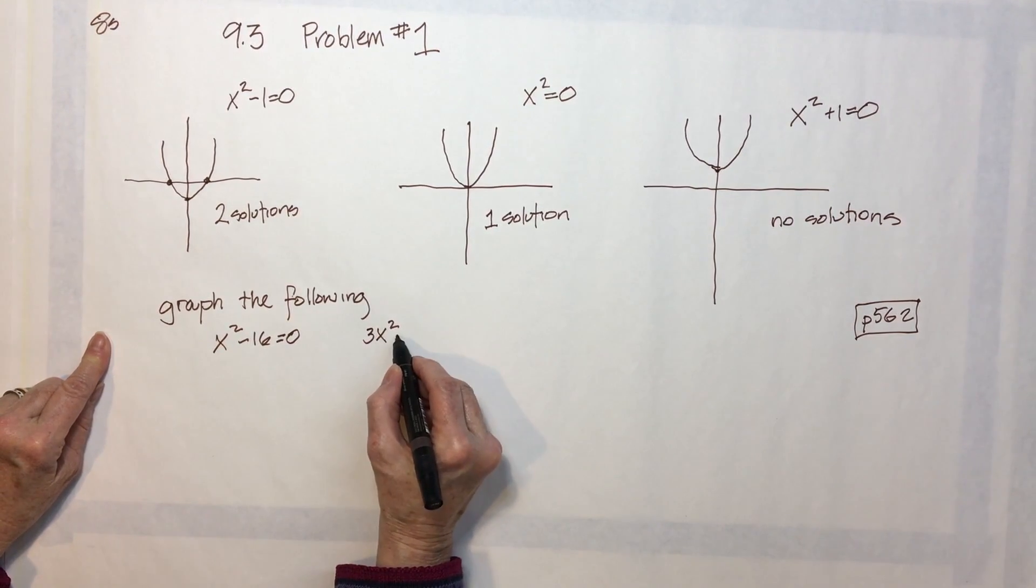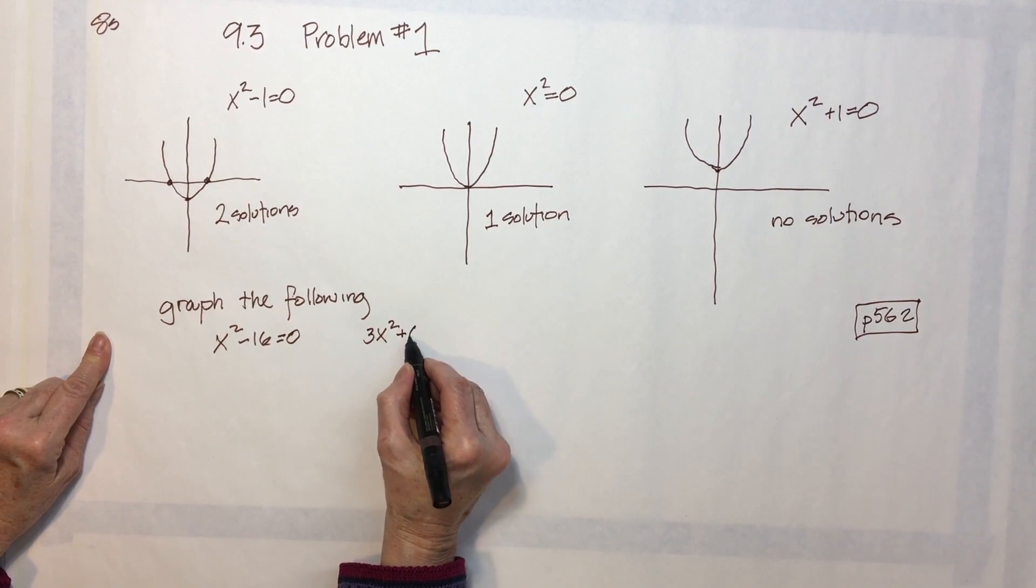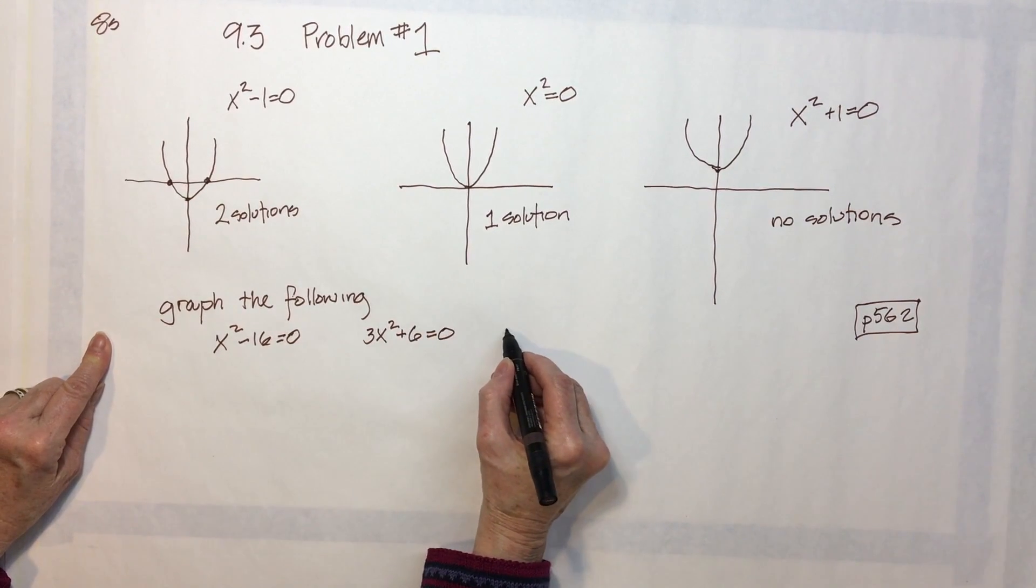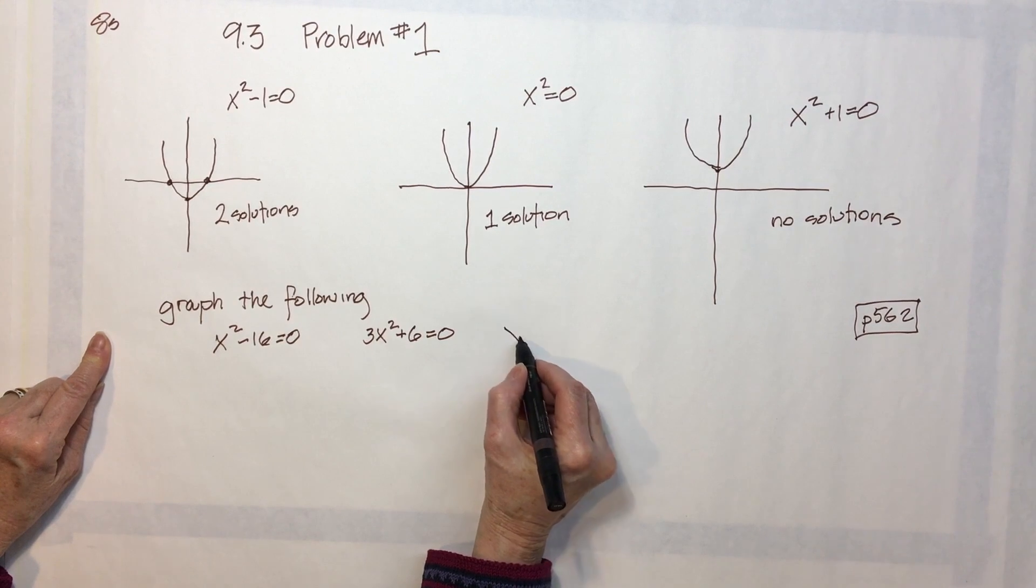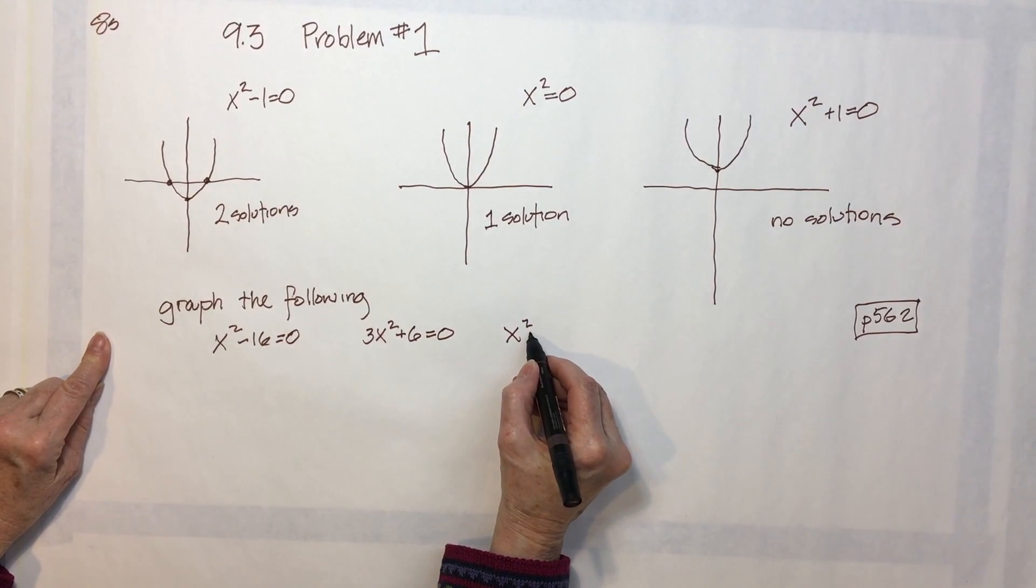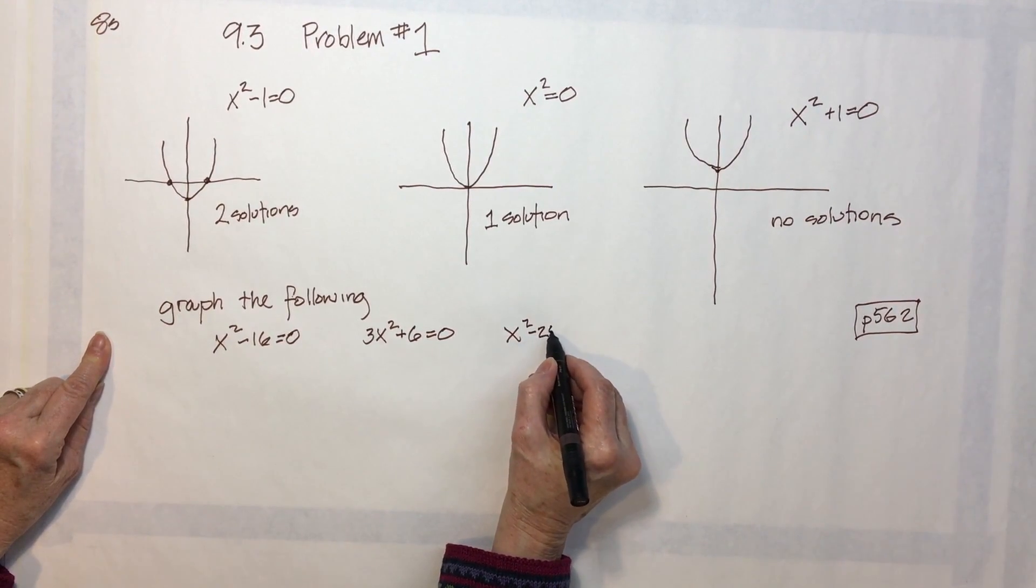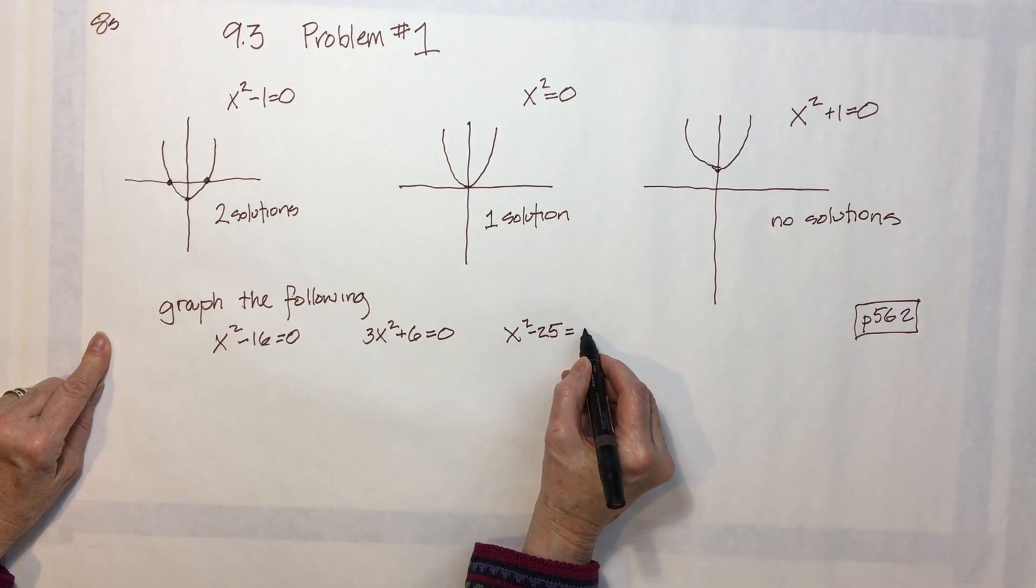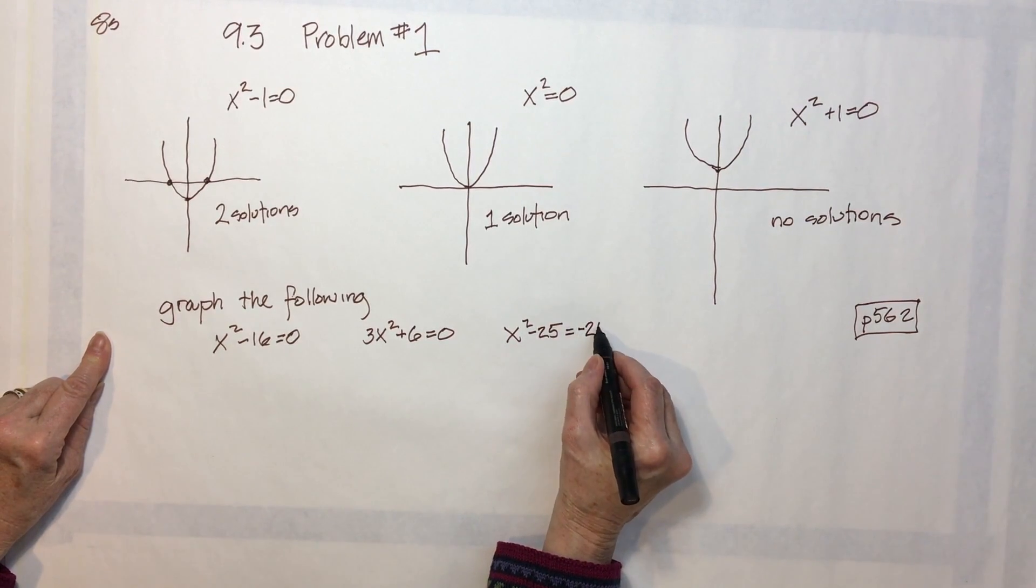3x squared plus 6 equals zero. And finally, x squared minus 25 equals negative 25.